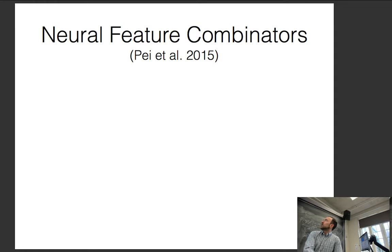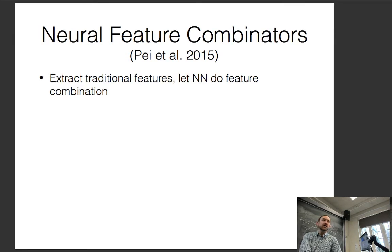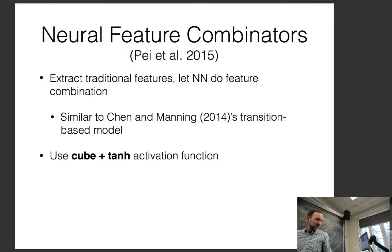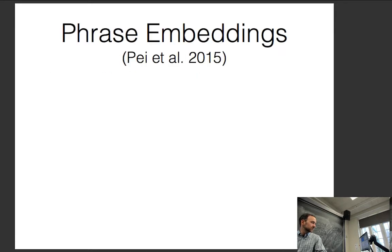The first neural models in this area started by using neural networks to more efficiently calculate feature combinations — like the Chen and Manning paper for dependency parsing, which was a transition-based model that combined features more effectively. For graph-based dependency parsing, they used a cube-dot-plus-tanh activation function, averaged embeddings for phrases, and second-order features.